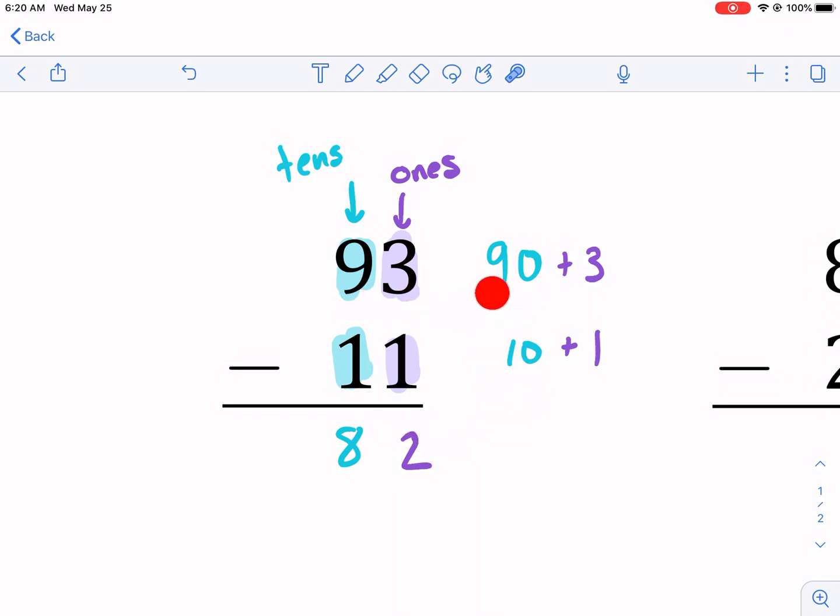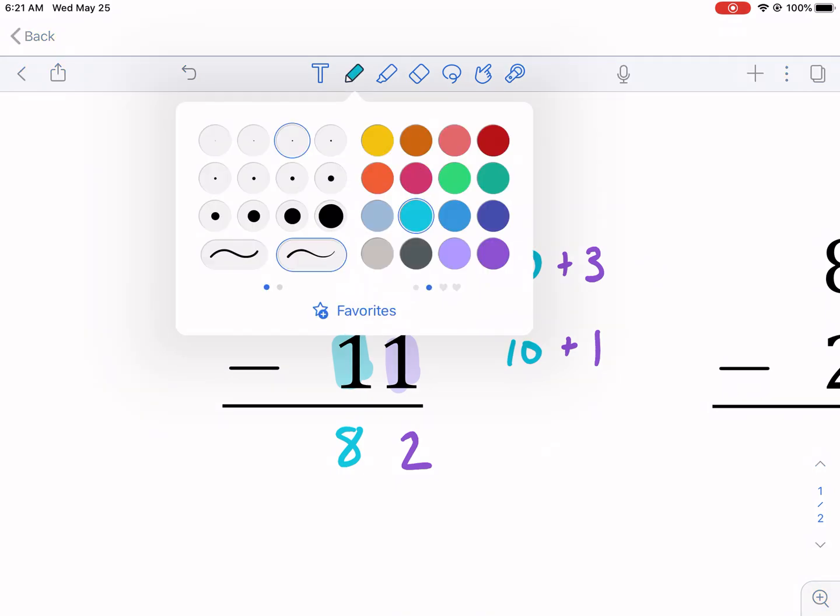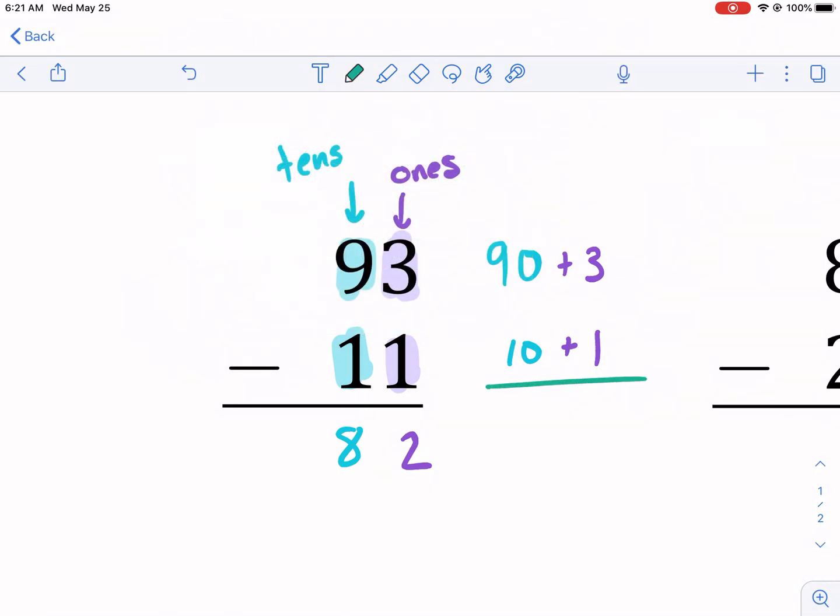And 9 means 90. These ones place, they just mean the number, so 3 and 1. But this is really what we're talking about. So if we do this subtraction here, and I'm going to change to green real fast, not going to do it again. If we subtract 3 from 1...